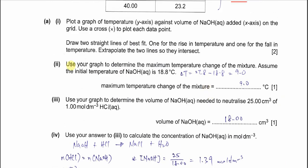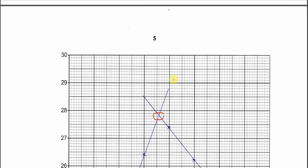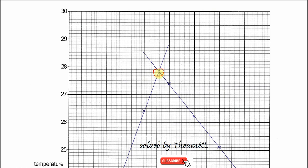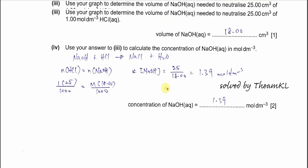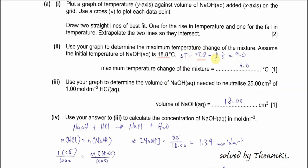Once we plot the graph, use it to determine the maximum temperature change of the mixture. From my graph I get a maximum temperature of approximately 27.8°C and an initial temperature of 18.8°C. So we use maximum temperature minus initial temperature to get roughly 9 degrees C. This is the delta T — the maximum temperature change of the mixture.